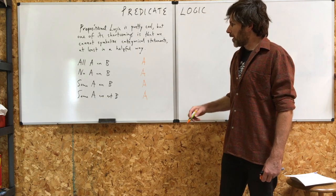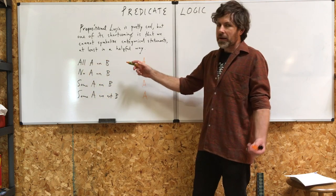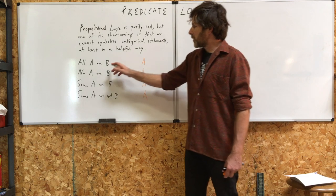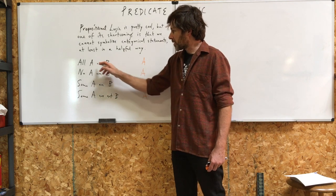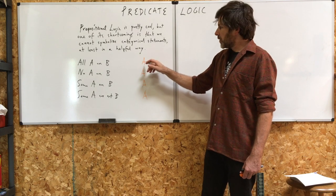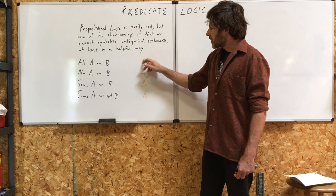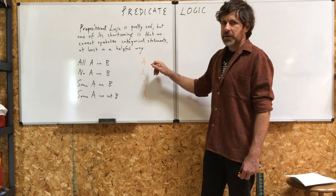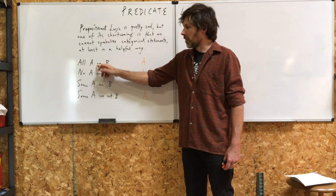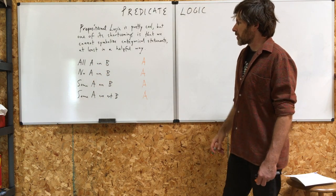You see the problem right here. There's a certain complexity — all A's are B's, it's not that complex — but that logical complexity, the relation between these two sets, these two categories A and B, is not really represented here with just A. You have to know what A stands for to get that idea. The symbol itself does not represent the kind of complexity this statement clearly reveals. So that's one problem with propositional logic.